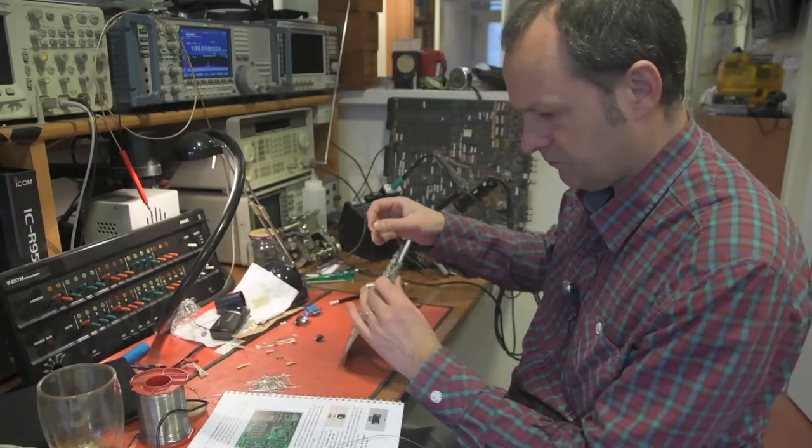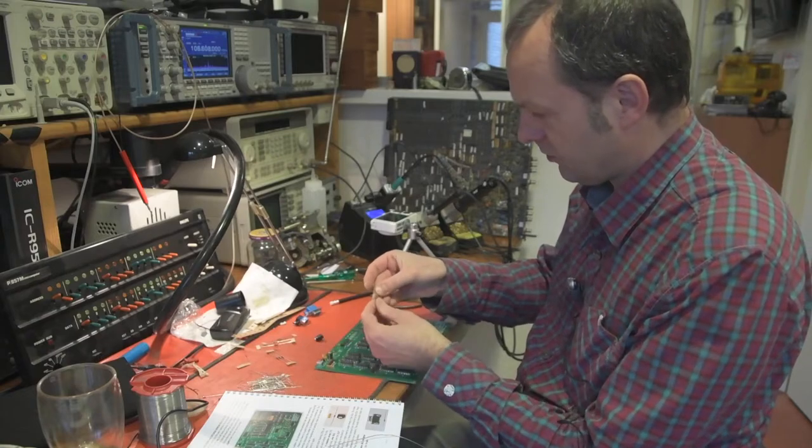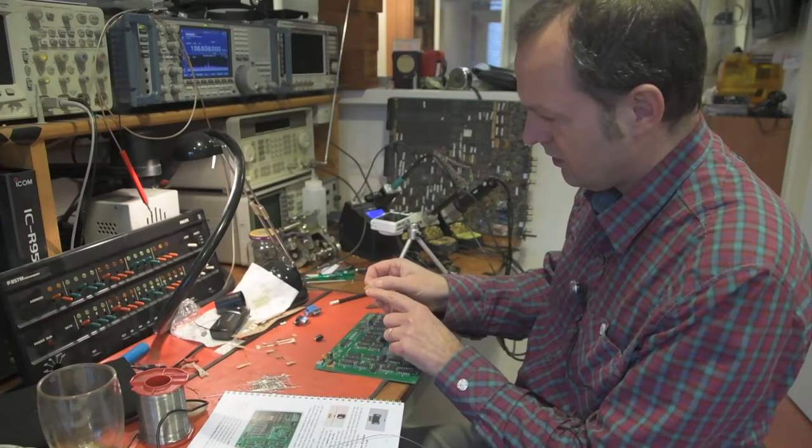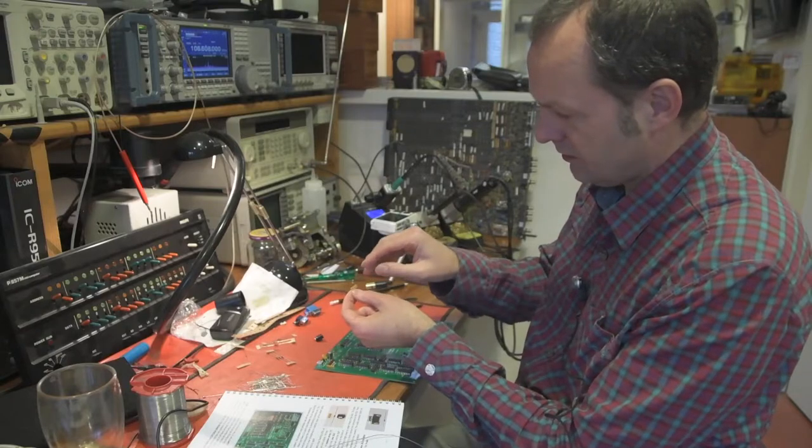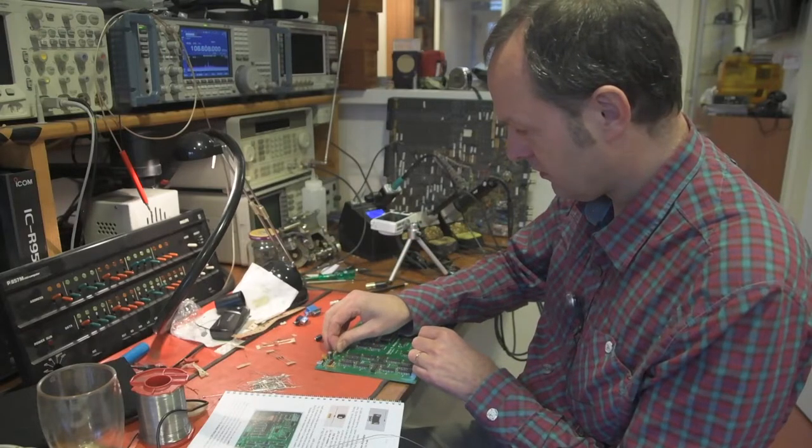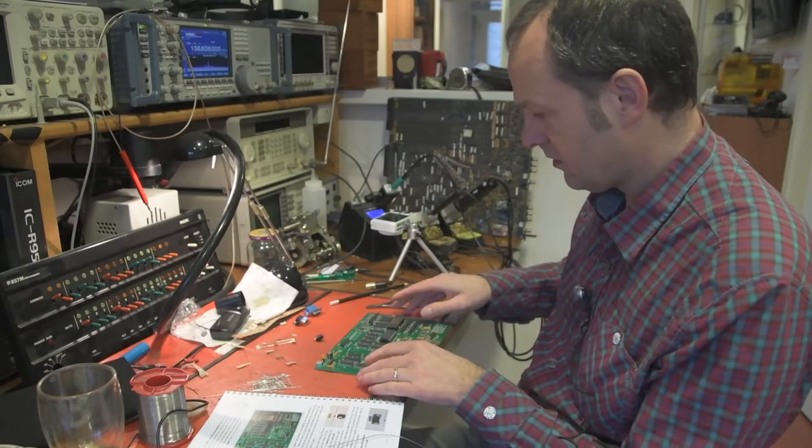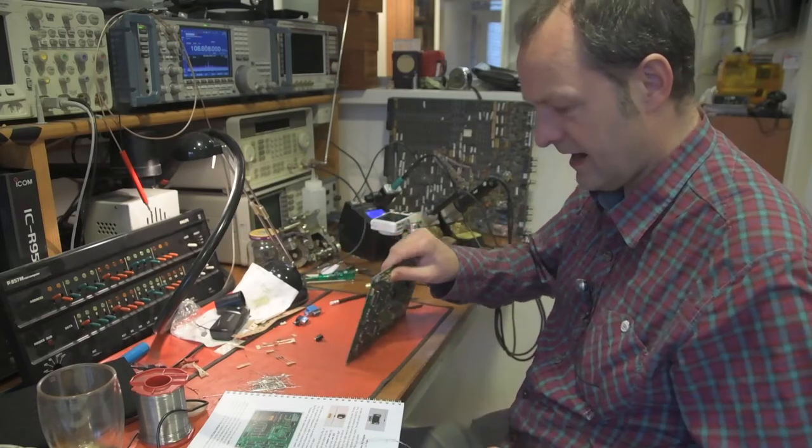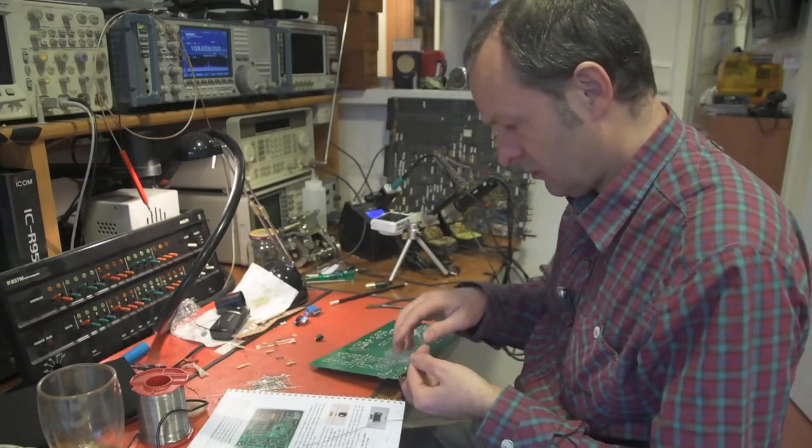Then there's the resistor array—the 6-pin array. This also has a dot. The left side, if you look at the lettering, is where the dot is, and this needs to go on the left on the board. It's marked DAC, digital to analog converter.